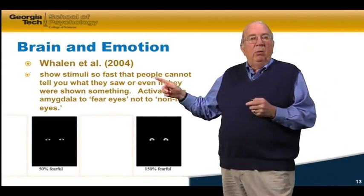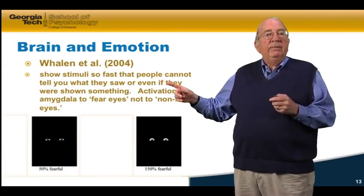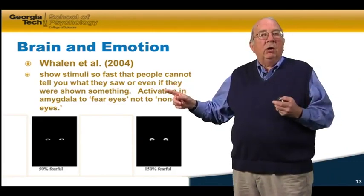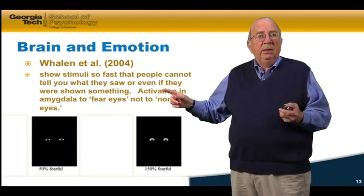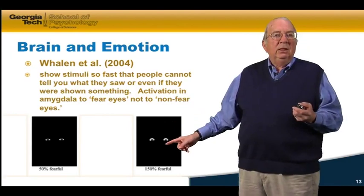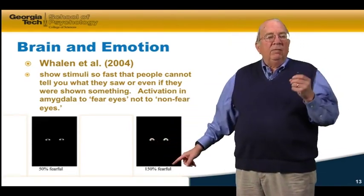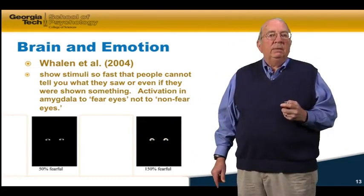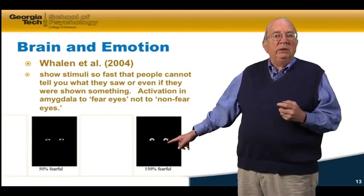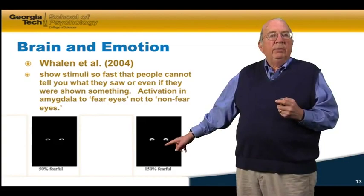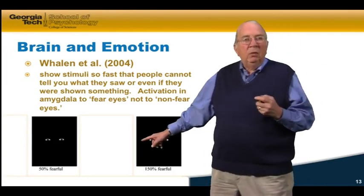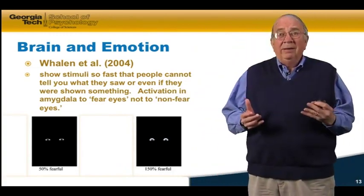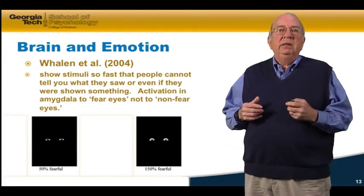An interesting study by Whalen and colleagues shows that stimuli can occur so fast that people cannot even tell you what they saw — this is called subliminal perception. For example, they would flash different sets of eyes so quickly that subjects couldn't report what they saw. But when measuring amygdala activity, the fearful eyes produced amygdala stimulation while the other eyes did not. So here's a case where we can't even report what we saw, but it causes an emotional response in the amygdala.